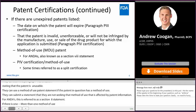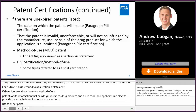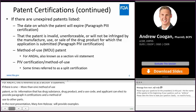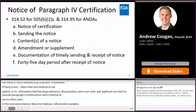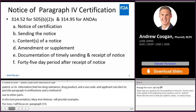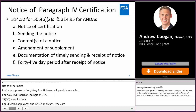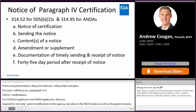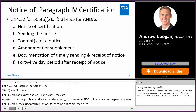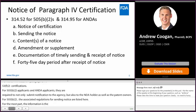In the next presentation, Marianne Holovac will provide examples related to method of use patents and split certifications. For now, I will focus on paragraph 4 certifications that apply to both ANDA and 505B2 applicants. Notice of paragraph 4 certification: applicants are required to submit paragraph 4 certification information not only to the agency but also to the NDA holder and patent owners. The associated regulations for sending notice are 314.52 for 505B2s and 314.95 for ANDAs.